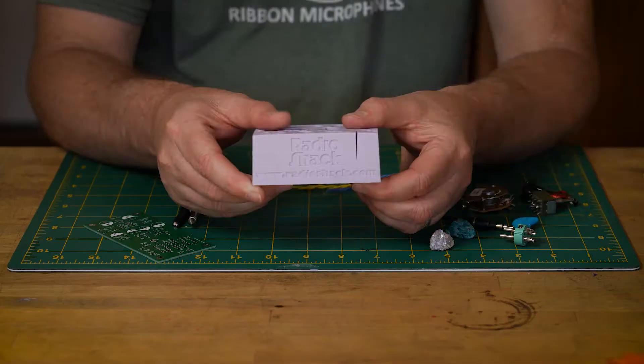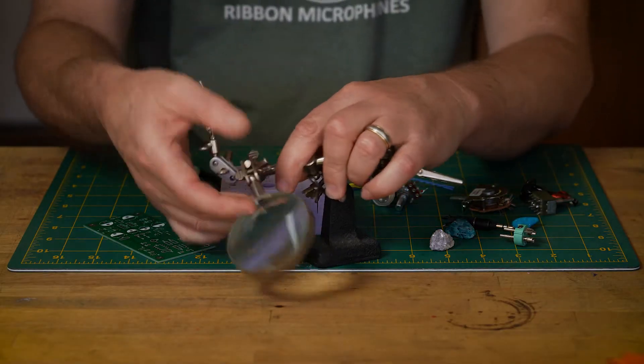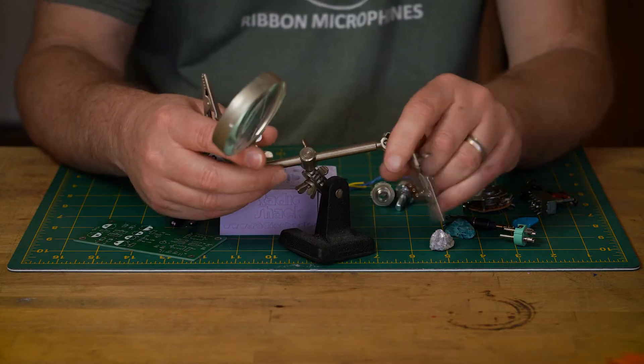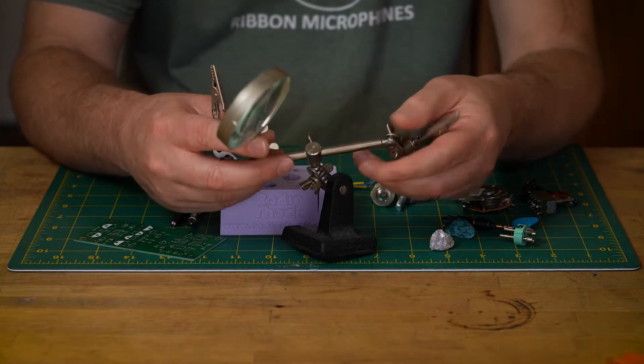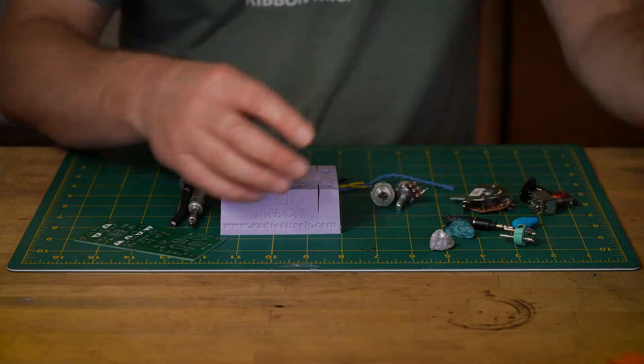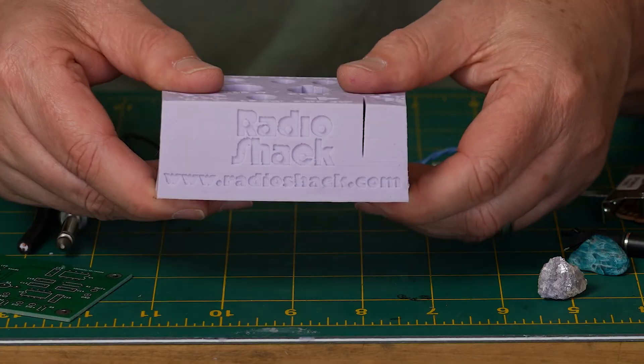This is the new RadioShack Hot Holder. It replaces these janky third hands that tip over, scratch parts, crush insulation, and suck the heat out of your work. The Hot Holder solves all those problems.